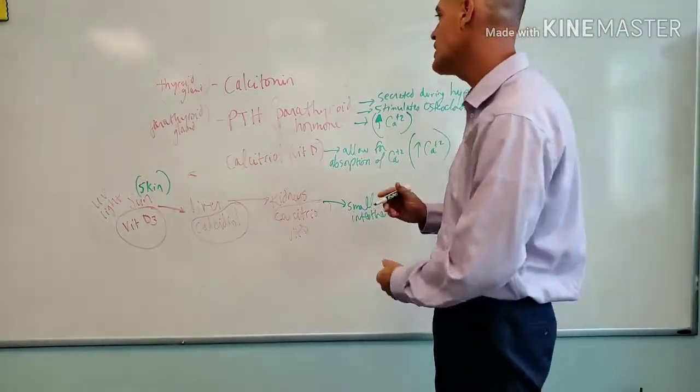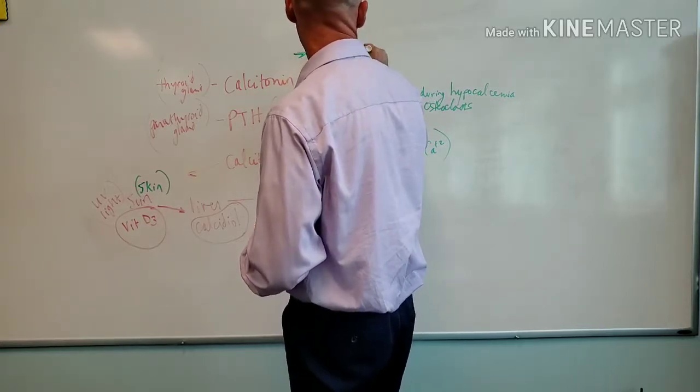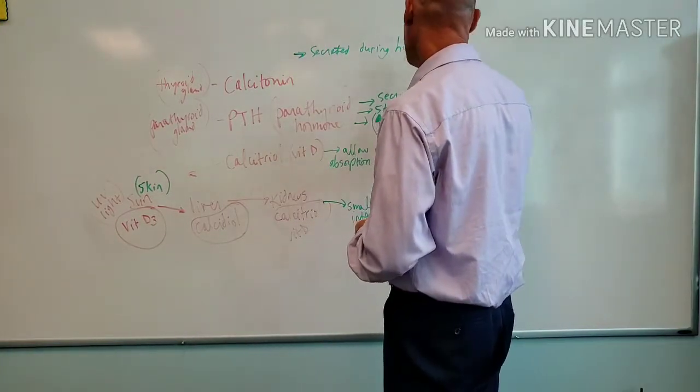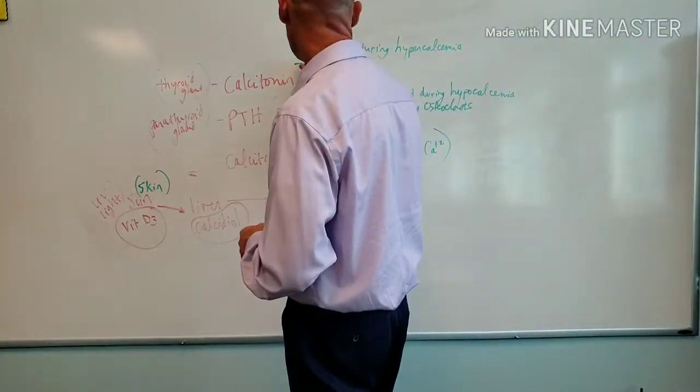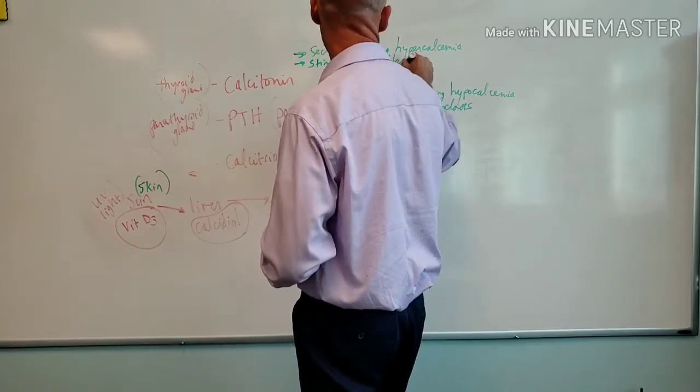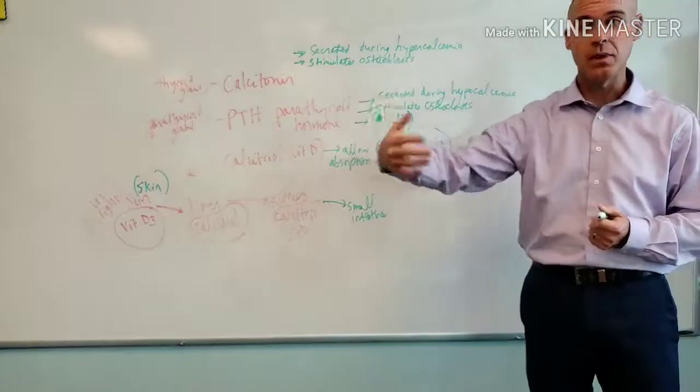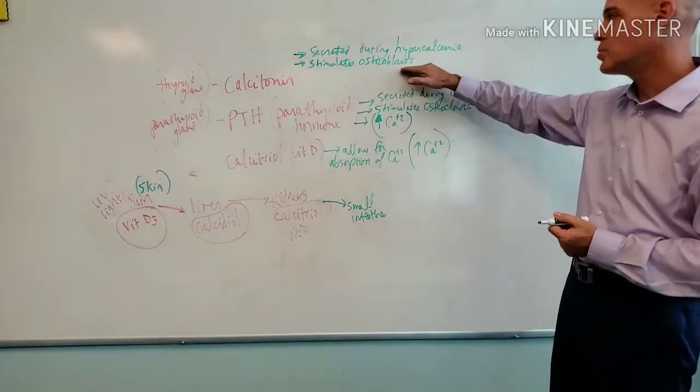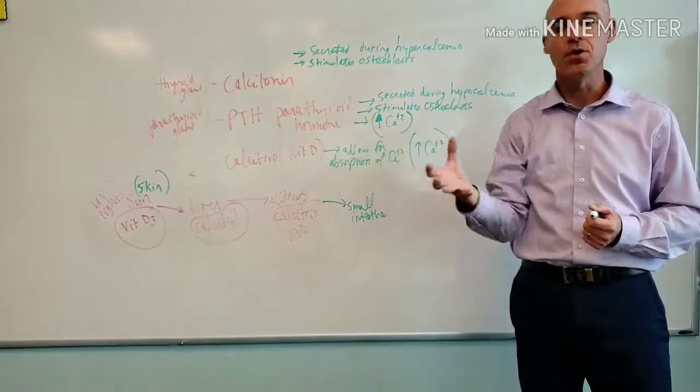Now calcitonin is going to be the exact opposite. It's our antagonistic hormone. So this is going to be secreted during hypercalcemia. So obviously this is going to be during elevated levels of calcium. It is going to stimulate osteoblasts. Osteoblasts are cells that build bone. They basically become osteocytes, which are bone cells. So we think about it this way: osteoblasts basically make bone, osteoclasts get rid of it, break it down.